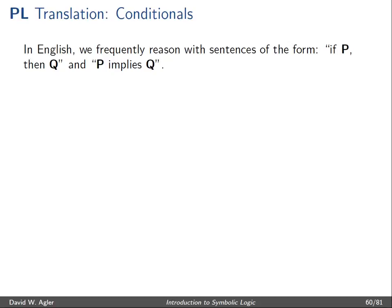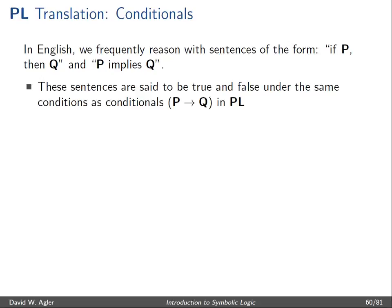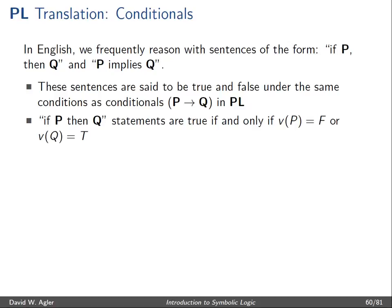In English we frequently reason and utter sentences of the form if-p-then-q or p-implies-q. How do we translate these types of statements into the language of propositional logic? According to some, these expressions should be translated in terms of the conditional — also known as the material conditional — that is, the formula with the right arrow as the main operator. A statement of the form if-p-then-q should be translated as p-right-arrow-q, because these are true and false under the same conditions.